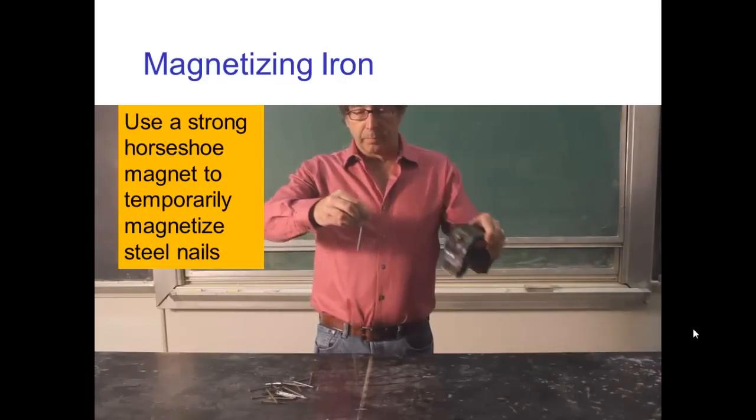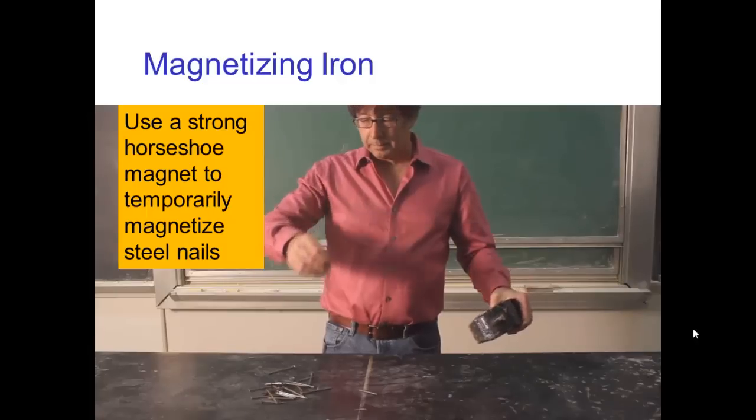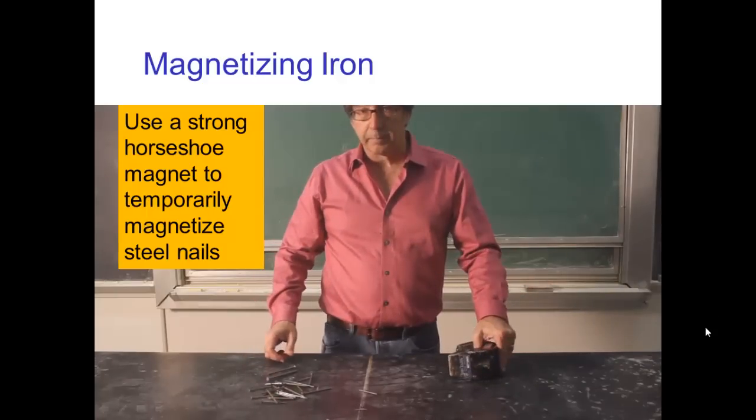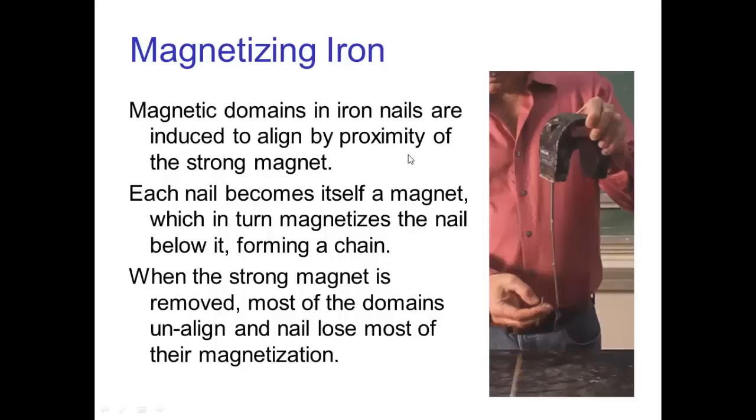But now if I take it away, it returns to being unmagnetized. So, as I said, the magnetic domains in the iron nails are aligned by proximity to the strong magnet so that each nail becomes a magnet temporarily.